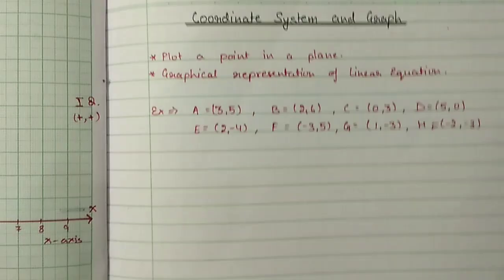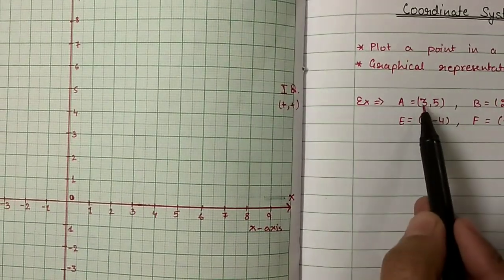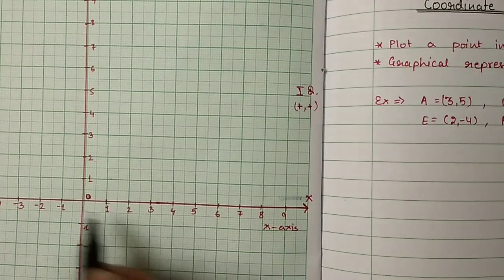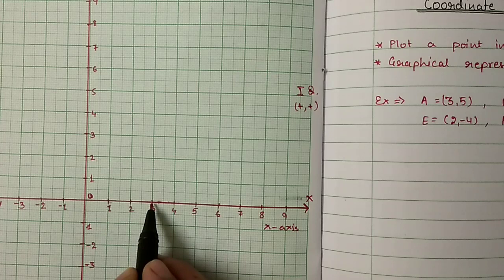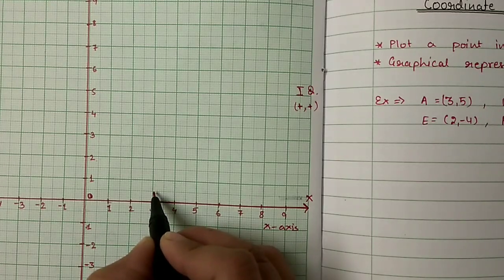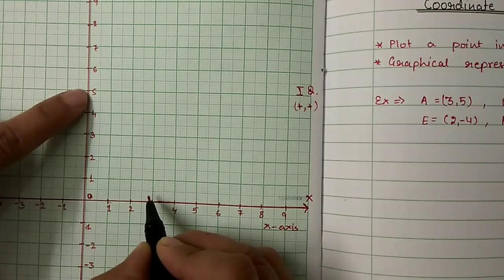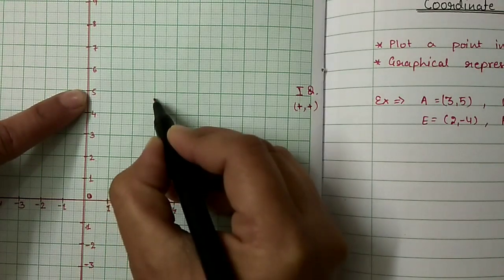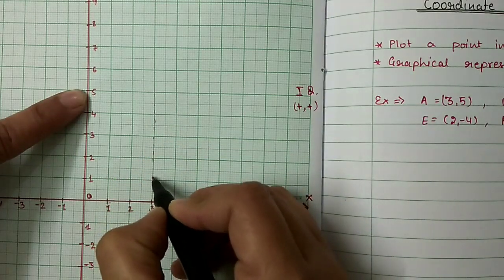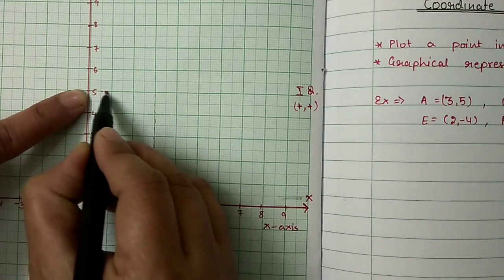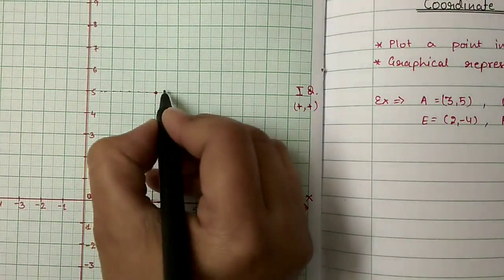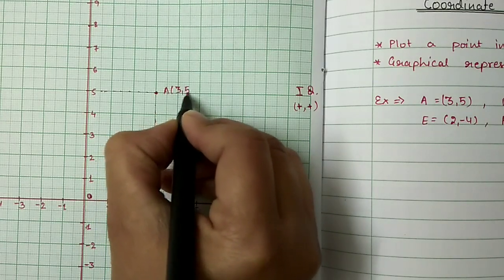The first point we have is (3, 5). So how to plot (3, 5) in this plane? 3 is +3 and 5 is +5. First, locate 3 on the x-axis, then locate 5 on the y-axis. Where these two dotted lines will meet — this point is the position of A, which is (3, 5).